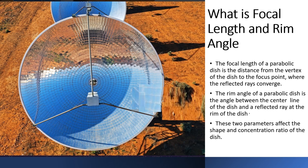The first one is: what is focal length and rim angle? The focal length of a parabolic dish is the distance from the vertex of the dish to the focus point, where the reflected rays converge. The rim angle of a parabolic dish is the angle between the center line of the dish and a reflected ray at the rim of the dish. These two parameters affect the shape and concentration ratio of the dish.